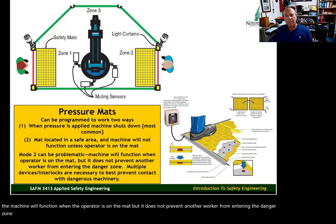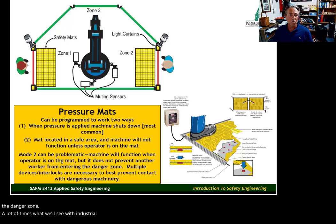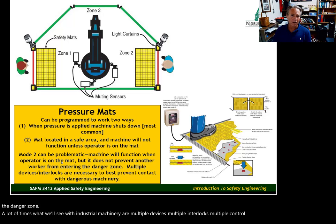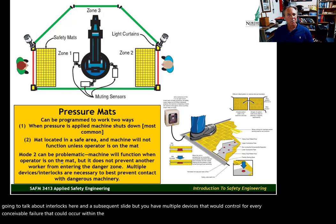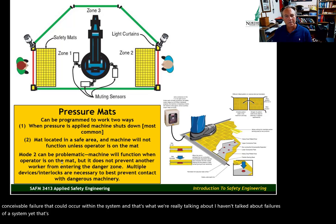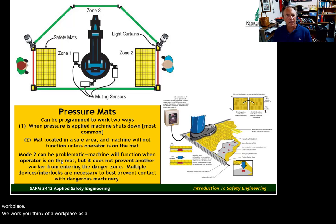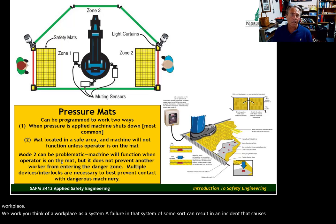A lot of times what we'll see with industrial machinery are multiple devices — multiple interlocks and multiple control devices — designed to control for every conceivable failure within the system. That's what we're really talking about: a workplace as a system where a failure of some sort can result in an incident that causes harm or a loss incident.